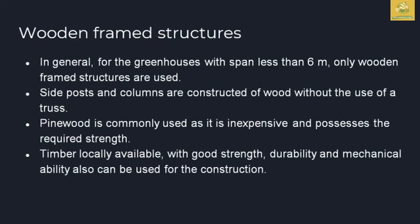Wooden frame structures are used in greenhouses with a span less than 6 meters. Side posts and columns are constructed of wood without the use of trusses. Pine wood is commonly used as it provides the required strength. Locally available timber with good strength, durability, and mechanical ability can also be used for constructing wooden frame structures.